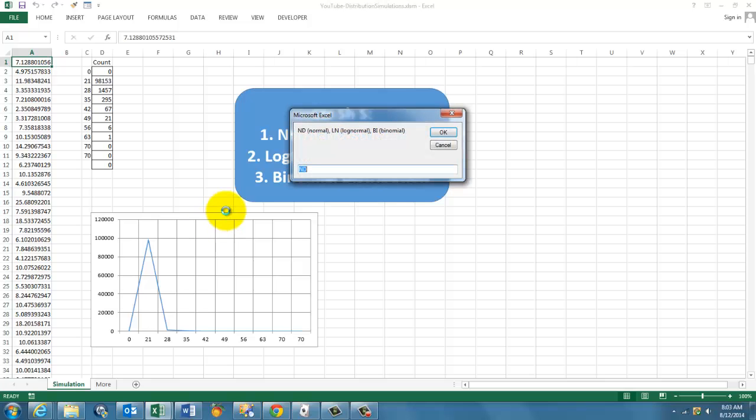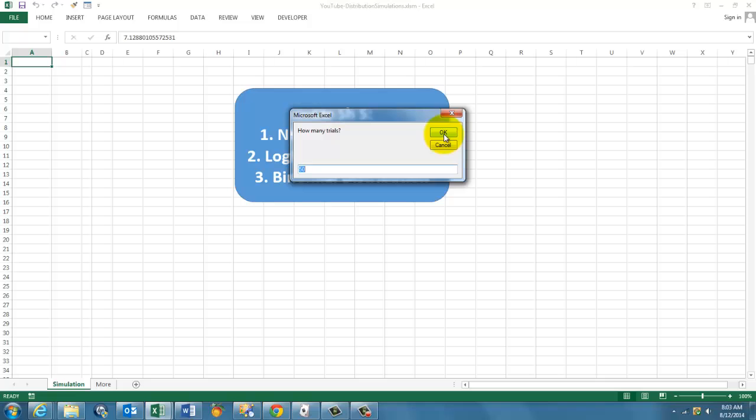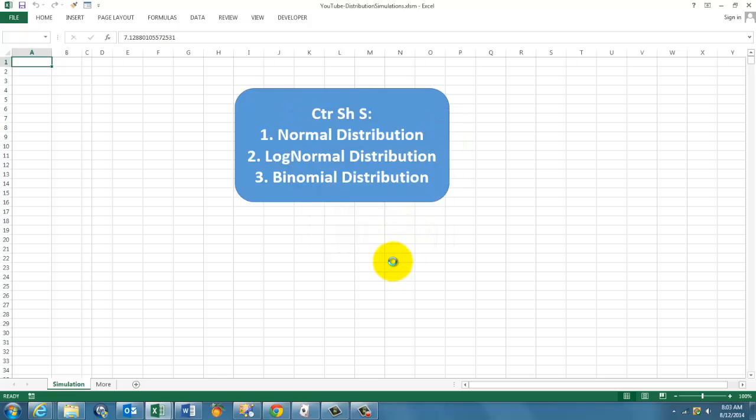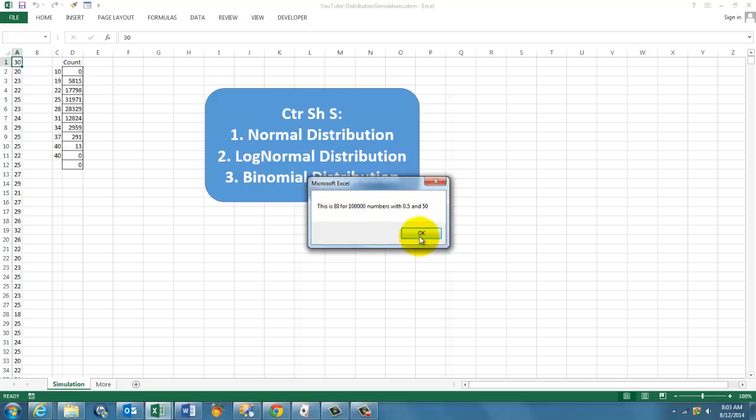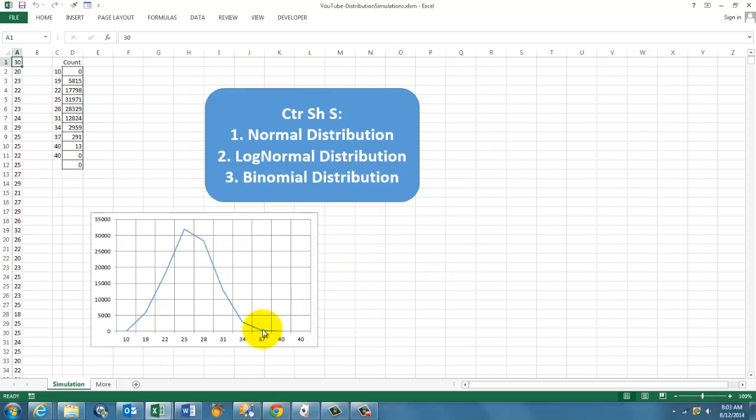And finally a binomial one. Control-Shift-S. BI. I keep the default values. This time I'm going to do an array. And that is the distribution—you see it's a little more skewed because it's a binomial one.